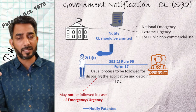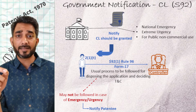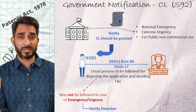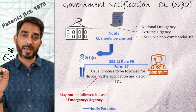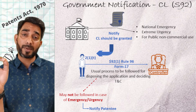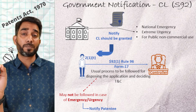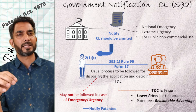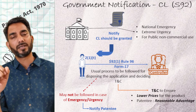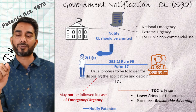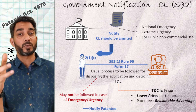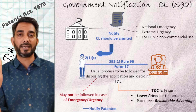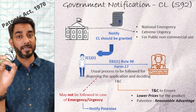As the CL is being granted, while deciding the terms and conditions, the controller keeps in mind that the patented product should be available to the public at the lowest price, and the patentee may obtain a reasonable advantage from the patent. This was the case when the central government decided to grant a CL for a patent in India.